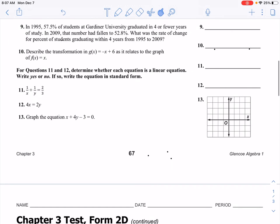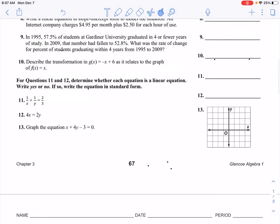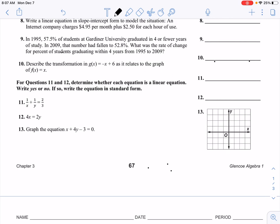Okay gang, we're starting with number 11. It says determine whether each equation is a linear equation, write yes or no. If so, write the equation in standard form. So for number 11, remember when we're looking to see if something's a linear equation, we know that our exponents have to be 1. Our exponents have to be 1.